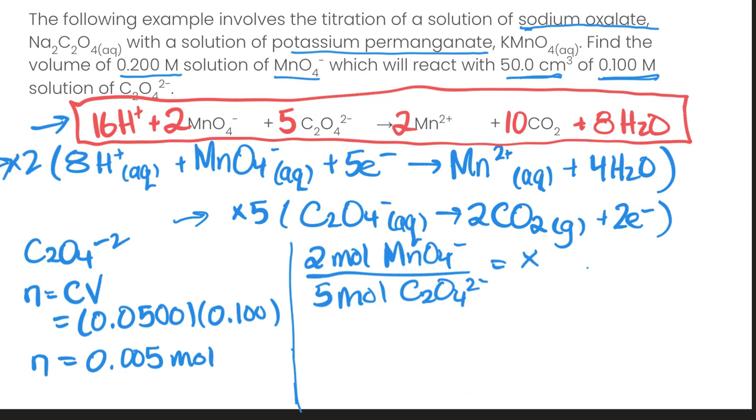And we're trying to find x, and then on the bottom we have 0.005 moles. Solving for this, that gives us 0.002 moles of MnO4-.